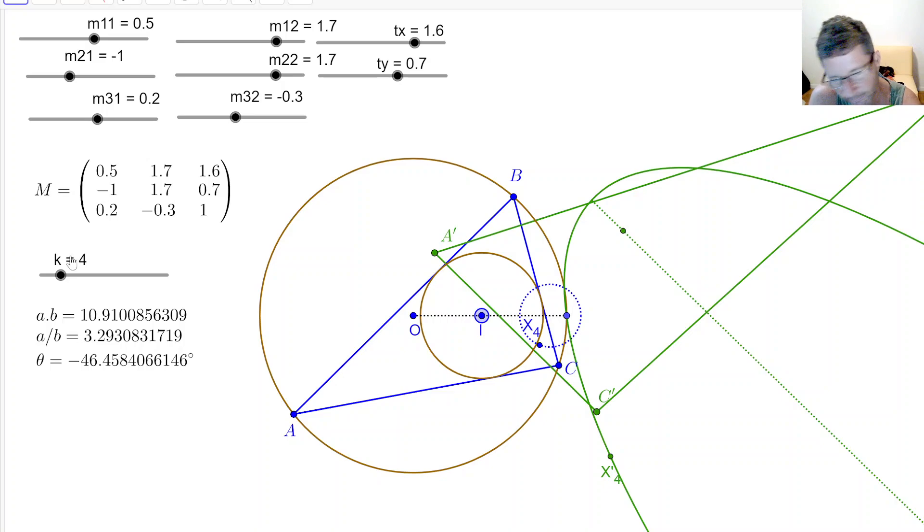And I'm then watching what's happening to the loci of x3, sorry, x2, x3, and x4 of the projected a prime, b prime, c prime triangles. So that's pretty much it. See you in the next video.